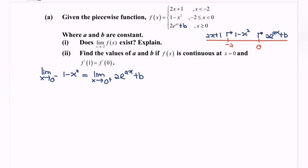Because the function is continuous, the limit exists. Substituting the value from the left, we get 1 equals 2 multiplied with exponent 0 plus B. Since exponent 0 equals 1, then B equals 1 minus 2, so B equals negative 1.